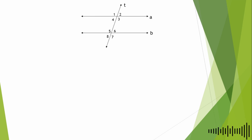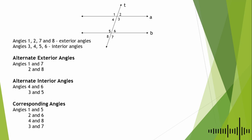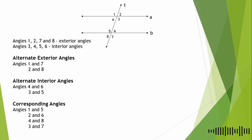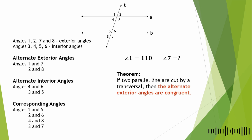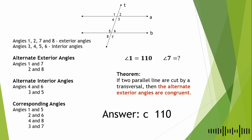In the given figure, with a transversal intersecting lines A and B, there are 8 angles formed. Angles 1, 2, 7, and 8 are the exterior angles; Angles 3, 4, 5, and 6 are the interior angles. Angles 1 and 7, and Angles 2 and 8 are alternate exterior angles. Angles 4 and 6, and 3 and 5 are alternate interior angles. Angles 1 and 5, 2 and 6, 4 and 8, and 3 and 7 are corresponding angles. Since Angle 1 measures 110°, and alternate exterior angles are congruent, the measure of Angle 7 is also 110°. The answer is letter C.